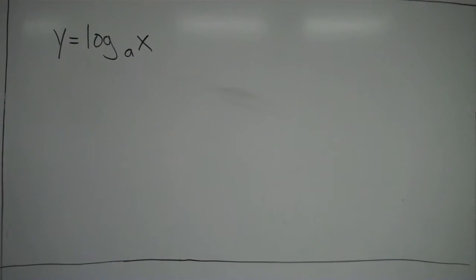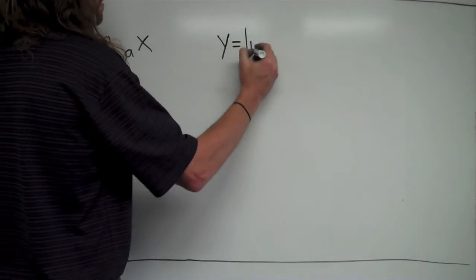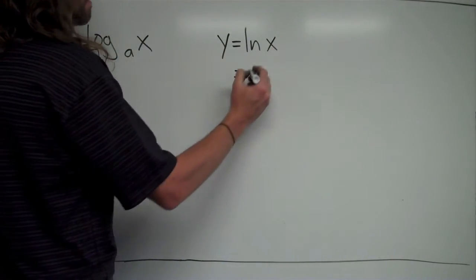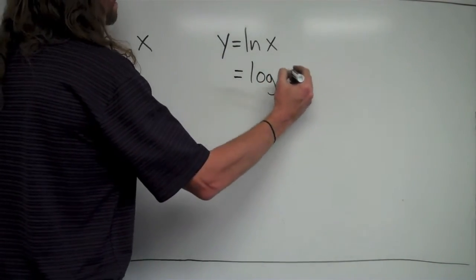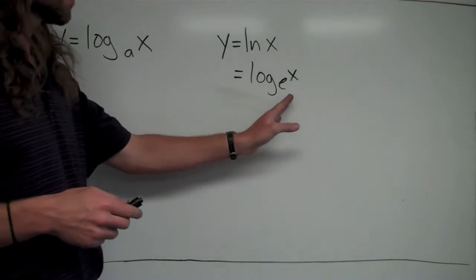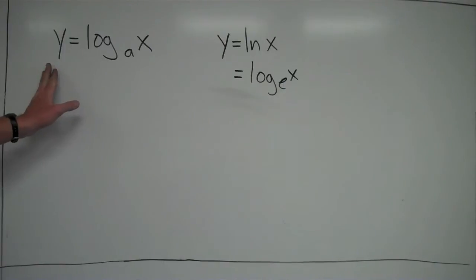Let's take a look at y equals log base a of x, where a could be any constant — it could be 10, it could be 5, it could be whatever — and we want to find the derivative of it. In calculus, you most often see y equals natural log of x, which is the same as log base e of x. Log base e is used so often that it has its special name, natural log. But we want to know what the derivative of a logarithmic function is for something that's not base e.